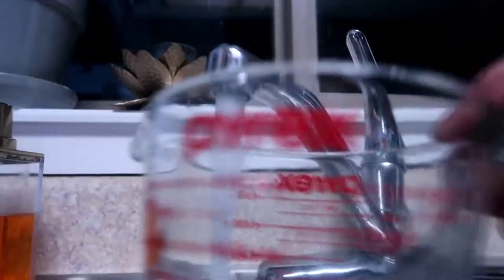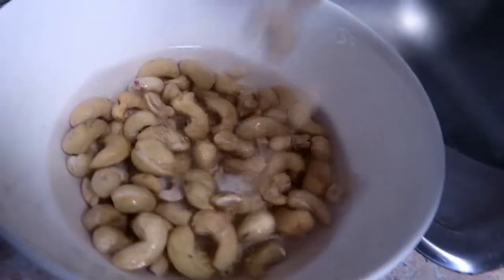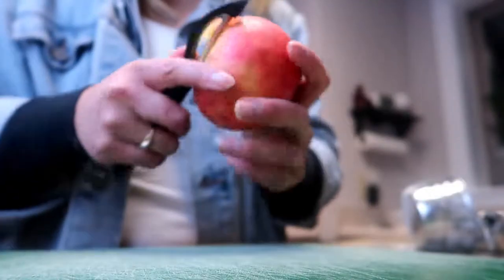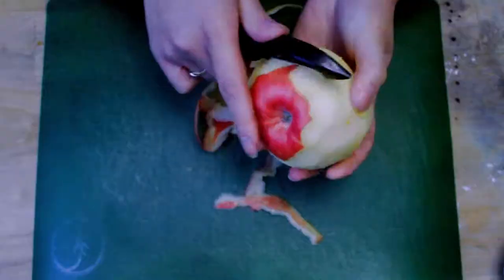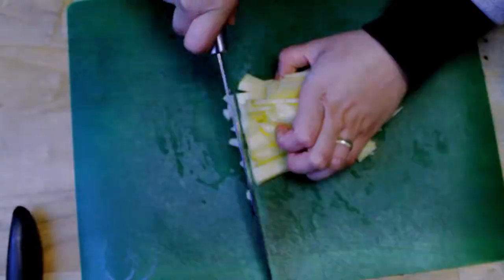We're going to start by soaking our cashews in warm water, and then we're also going to prepare our apples. We're going to halve them up, then slice some and dice the others, so you should have a pile that looks something like this.